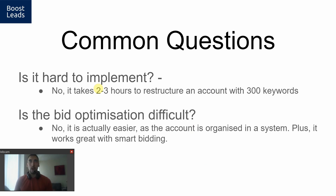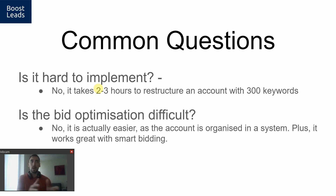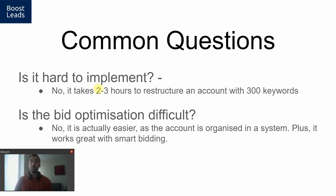I hope I've given you tons of value so far. Is this hard to implement? Creating one ad group for every keyword — if you do it manually it will be super complicated. But the way I do it, I build it out in a spreadsheet with formulas and then upload it with Google Ads Editor. It takes about two or three hours to restructure an account with around 300 keywords. When it comes to bid optimization, you might think it's going to be difficult with so many keywords and ad groups — but no, it's actually easier because your account is very well-structured. If you get a lot of conversions at a good rate, you can turn on smart bidding and it works great, because it can bid at such a granular level with all these different keywords built out with a specific ad.